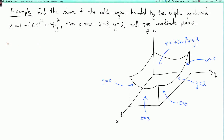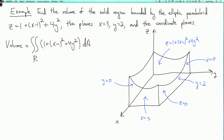So we're finding the volume under this graph, which means the volume of the region is the double integral over R of 1 plus x minus 1 squared plus 4y squared, dA, where R is the rectangle where x goes from 0 to 3 and y goes from 0 to 2. Let's evaluate this double integral.